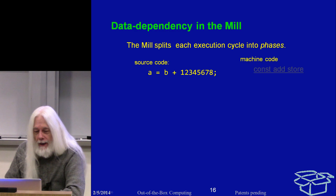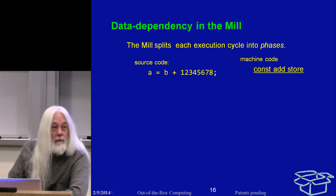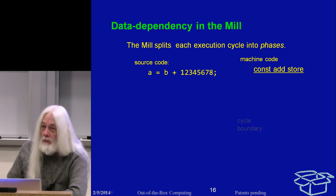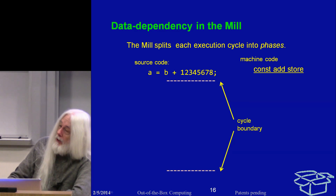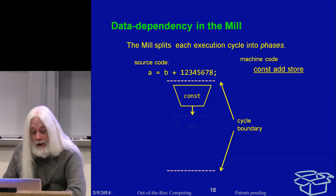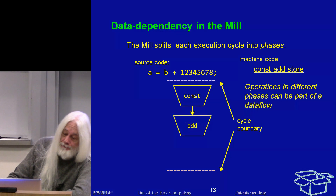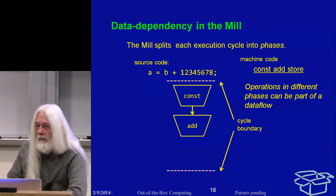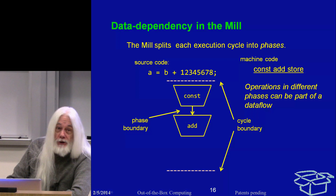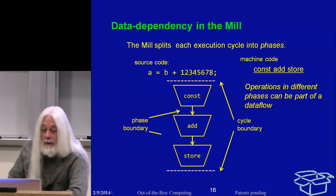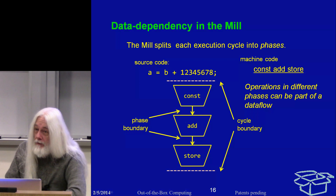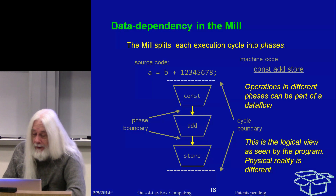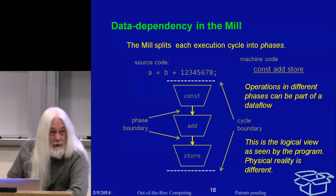That same source code will produce the same machine code as the VLIW uses: const, add, and store all in one instruction. The const unit happens in reader phase and feeds the add, because operations in different phases can be part of the same data flow — there's a phase boundary between the two, but not a cycle boundary. And there's a phase boundary between the add and the store.